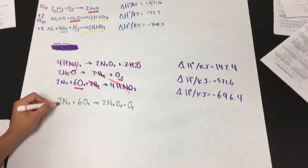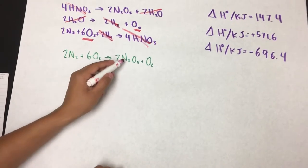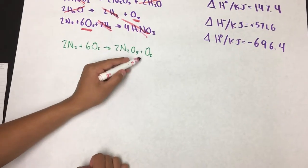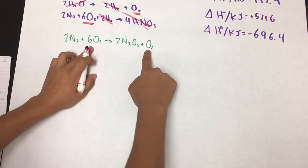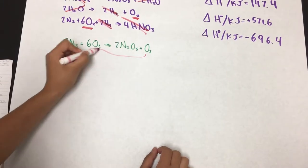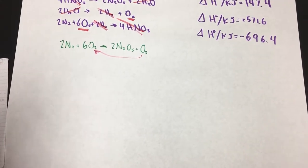And written out, it's 2N2 plus 6O2 yields 2N2O5 plus O2. And now, since we got these on different sides, we subtract this one from this one. Coming out to be,